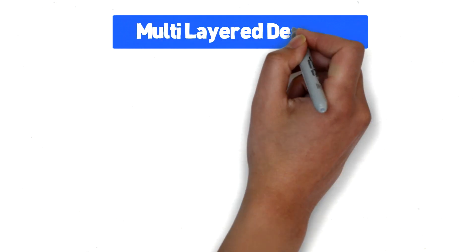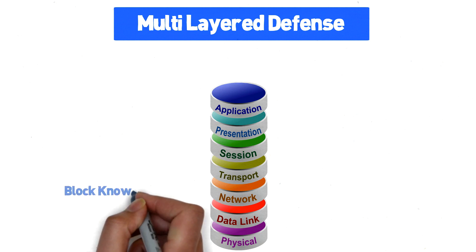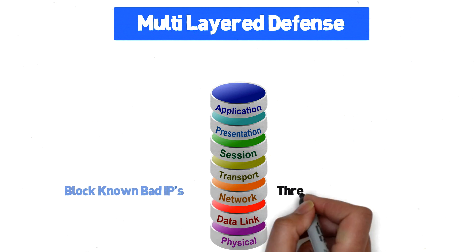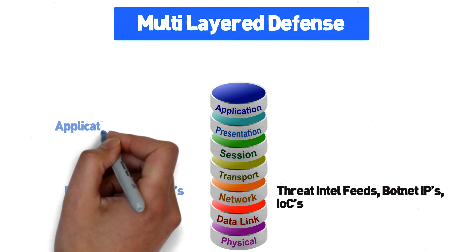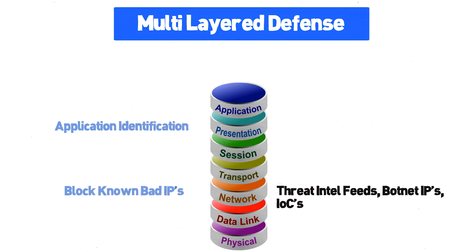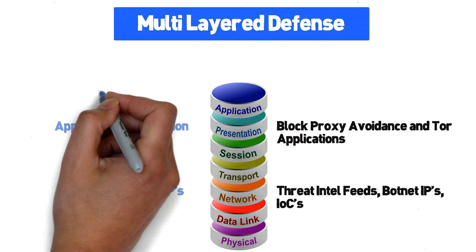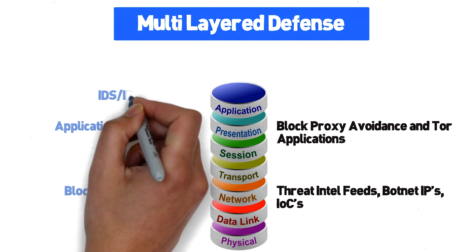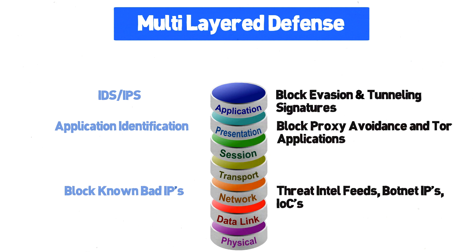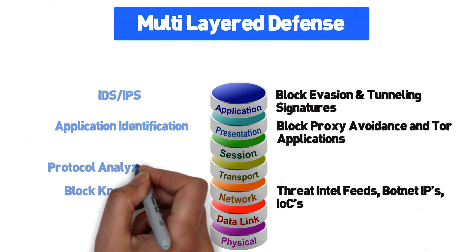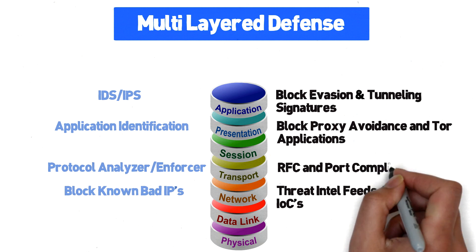That brings us to our fifth and final point: setting up a multi-layered approach to blocking proxies. The first measure is to block known command and control servers at the layer 3 level, either via threat intel feeds imported into an ACL or a botnet package using a signature-based approach on your next-gen firewall. Next, use application identification to block the proxy avoidance category and Tor applications from any outbound connections — with exception rules for specific users or subnets if needed. Our third layer is leveraging our IPS to block tunneling data traffic inside other protocols, such as HTTP, DNS, or ping, where the IPS will alert and block unknown data appearing in parts of the protocol where it doesn't belong.